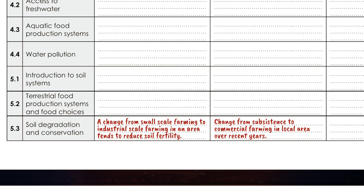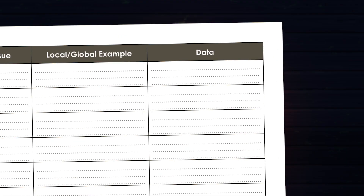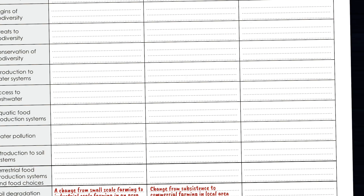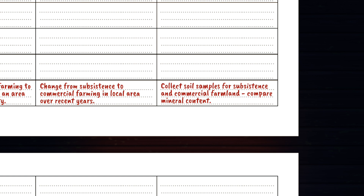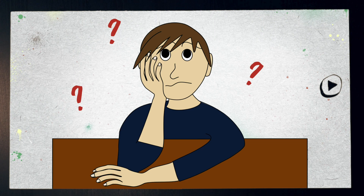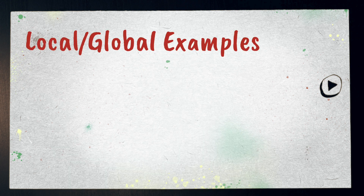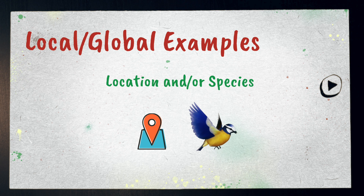Which leads us to the third step: outline the data you would collect. For this example, you could collect soil samples from commercial farmland and nearby subsistence farmland and compare the mineral content of each. Try not to overthink these ideas — this is just brainstorming, and it shouldn't take you too long to come up with an idea for every subchapter. When considering your local or global examples, try to name a location and/or species, as this will help you get more clarity in your ideas.